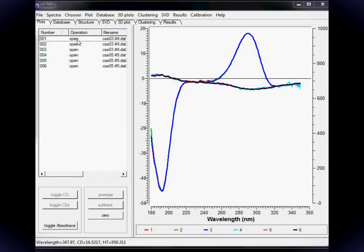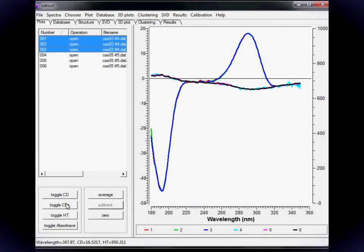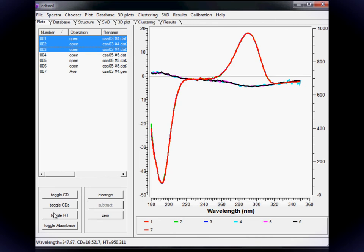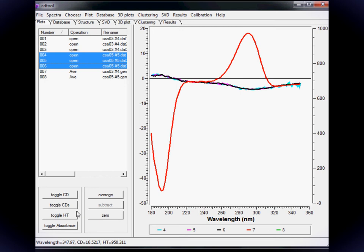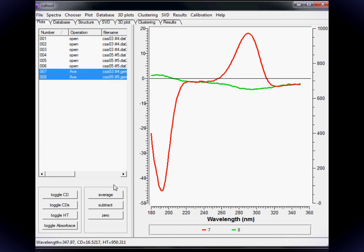Select the raw sample files and toggle average. Toggle CD to remove the sample files or press CTRL plus D to delete them. Repeat for the baseline files. Now select the average sample and then the average baseline and toggle subtract.